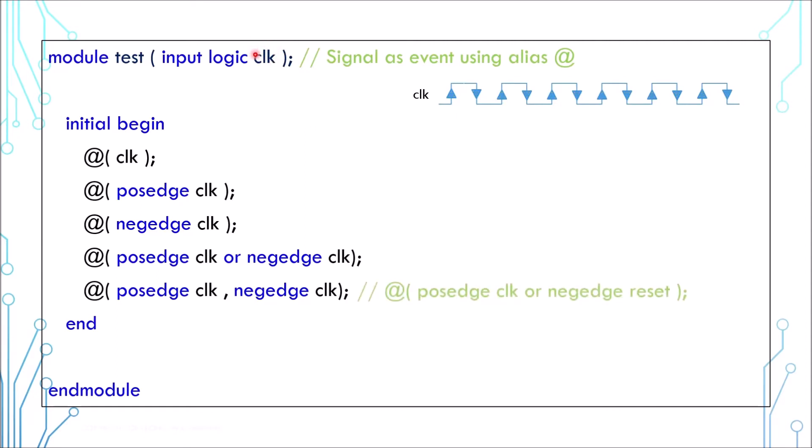If we go through this line by line, the initial block starts at time zero. The first statement is to wait for any changes in the clock, and it will wait or block until this moment here. The second statement waits for a positive edge.